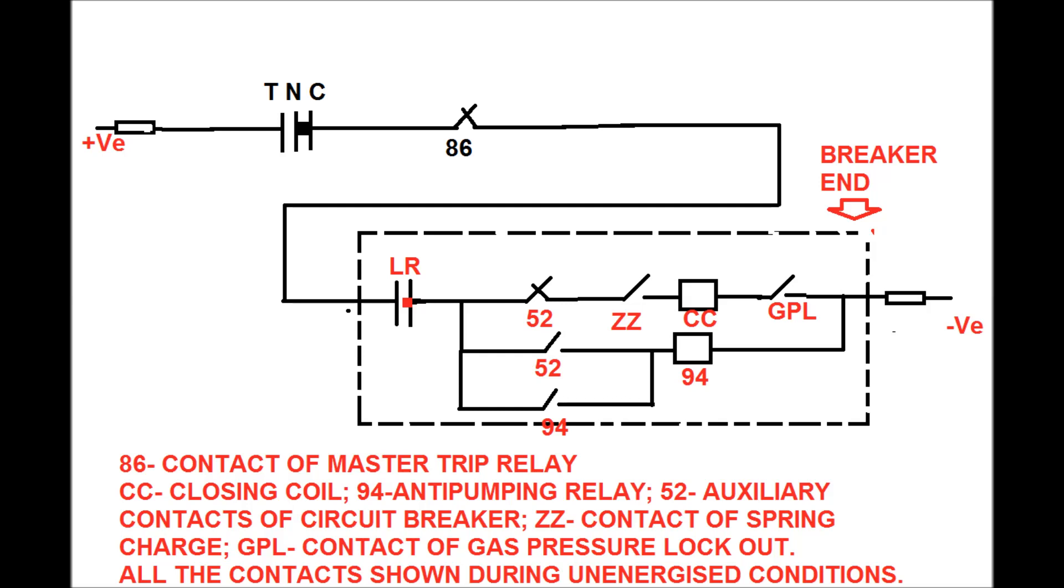52 is the auxiliary contact of circuit breaker. ZZ is the spring charge contact. Whenever spring is in charge condition ZZ remain in close position and CC is the closing coil.